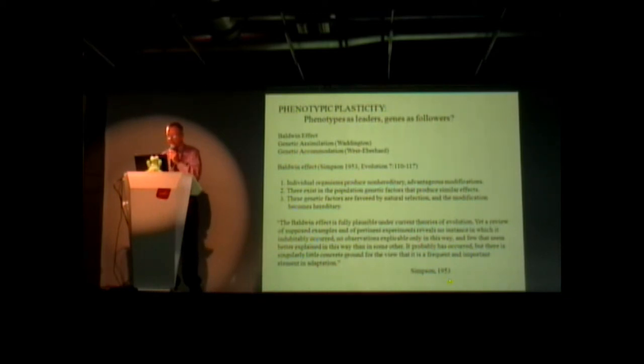The ideas here are various versions of the Baldwin effect, which was summarized by Simpson in 1953 as follows: individual organisms produce non-hereditary modifications which are often advantageous. Our skin becomes more melanized when we are in the sun, and perhaps that protects us from ultraviolet light.